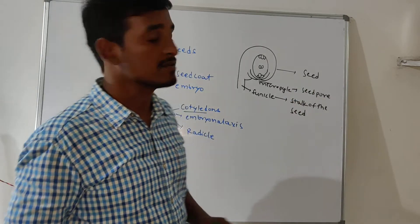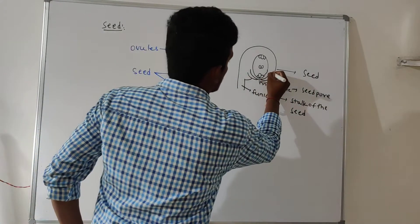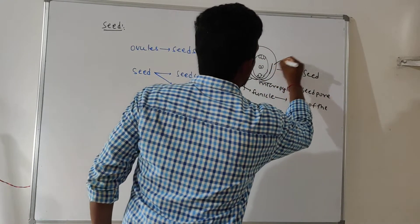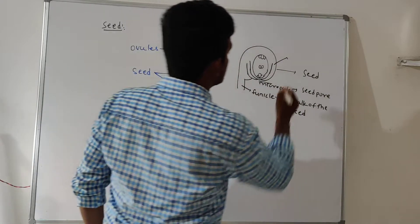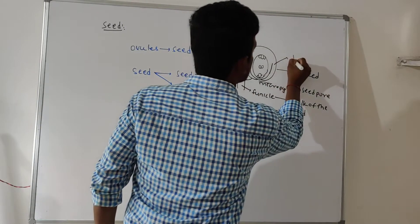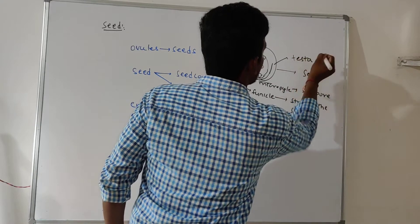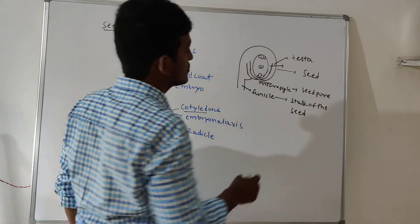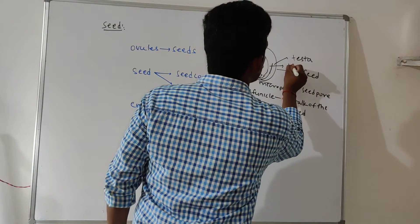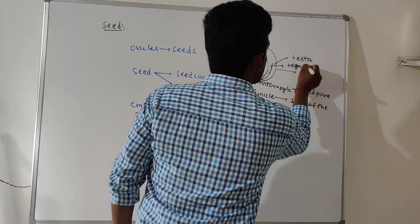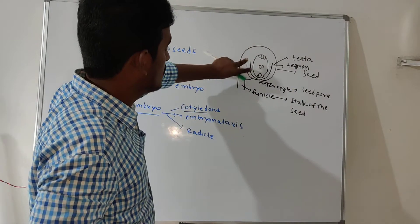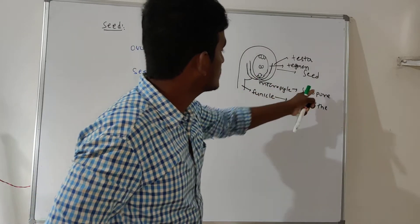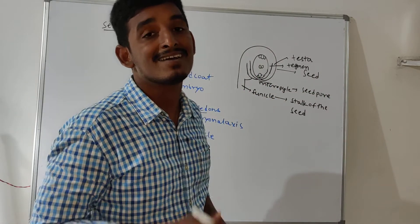With the seed pore, exchange of gases as well as absorption of water takes place. The ovule has two integuments: the outer integument is modified into the outer seed coat, also called the testa, and the inner integument is modified into the inner seed coat, also called the tegmen. So various parts of the ovule are converted into various parts of the seed.